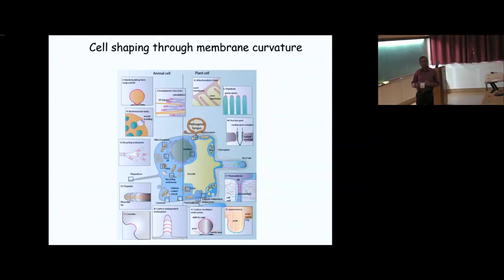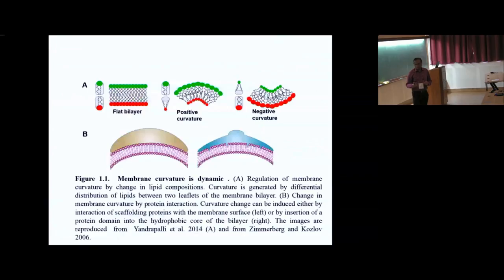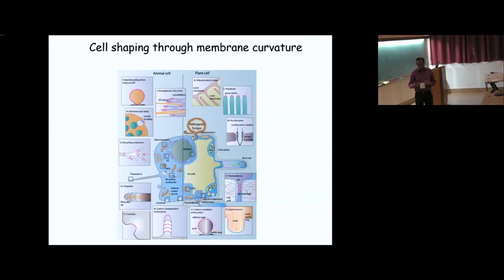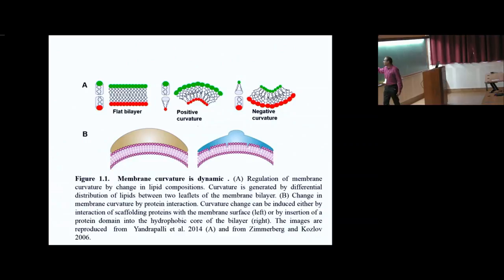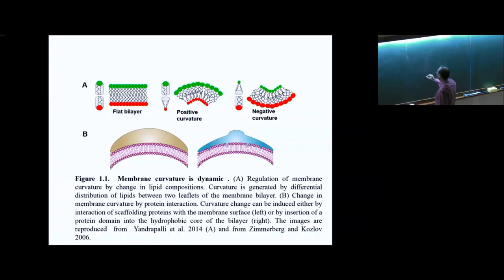How can we change the membrane? All these organelles need membrane curvature change. You can simply start with a flat membrane and change the lipid composition with the head group. As we know, lipids in the membrane have a head group which is hydrophilic — made up of phospholipids with a phosphate group giving negative charge — and an acyl group which is hydrophobic, forming a bilayer structure. If the head group diameter and the hydrophobic group diameter are the same, it forms a parallel structure giving a flat surface.